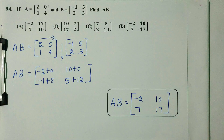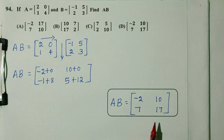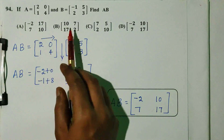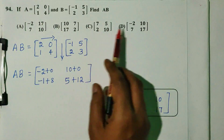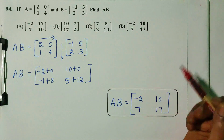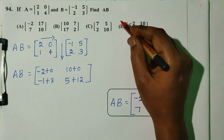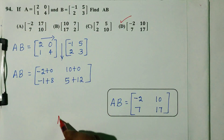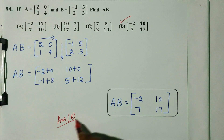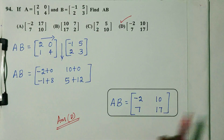So the answer matrix A×B = [-2, 10; 7, 17]. Option D is the right answer.